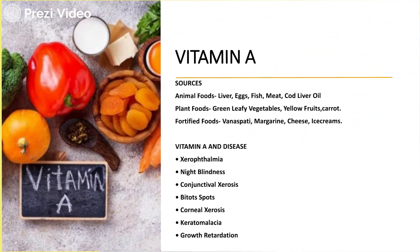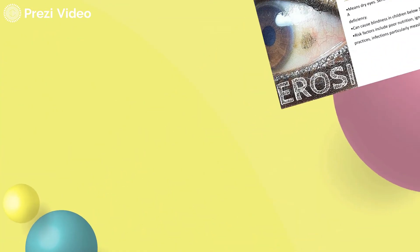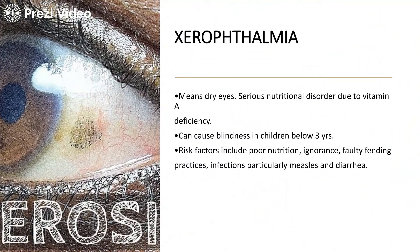The vitamin A sources have been listed, and the disease associated with vitamin A deficiency is xerophthalmia. Symptoms include night blindness, conjunctival xerosis, Bitot's spots, and corneal xerosis. Due to deficiency of vitamin A, several diseases can occur. Xerophthalmia can even cause blindness in children below three years of age. Risk factors include poor nutrition, ignorance, faulty feeding practices, and infections particularly measles and diarrhea.